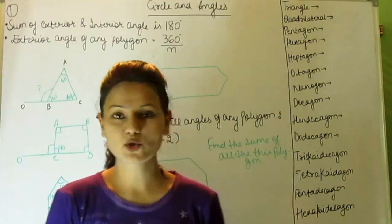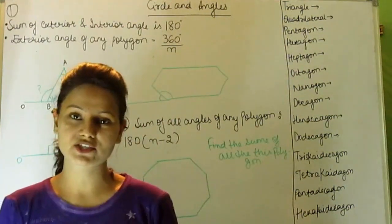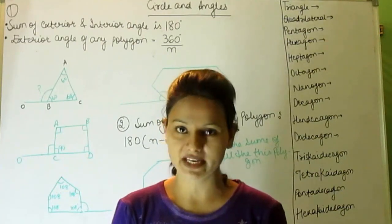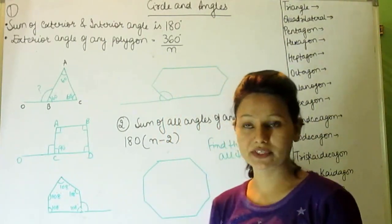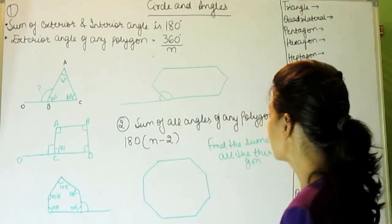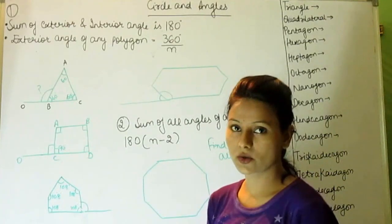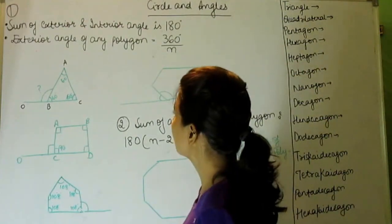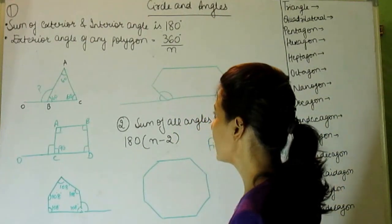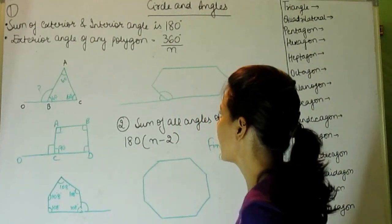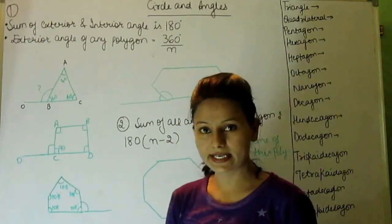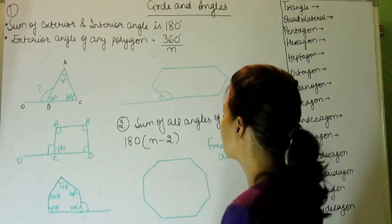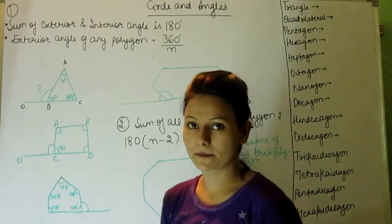Hello friends, welcome to governmentjobsecretion.com. Today we will learn a very important chapter based on geometry — circles and angles. First, here are two key points: the sum of exterior and interior angle is 180 degrees, and the exterior angle of any polygon is 360 divided by N, where N is the number of sides.